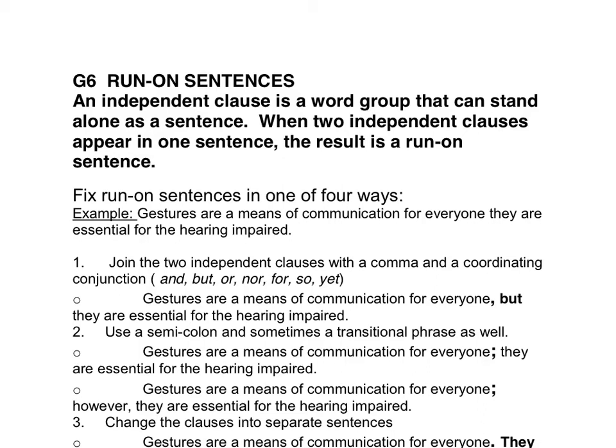Today we will be fixing run-on sentences, which is grammar code G6. An independent clause is a word group that can stand alone as a sentence. When two independent clauses appear in one sentence, the result is a run-on sentence. Fix the run-on sentences in one of four ways.